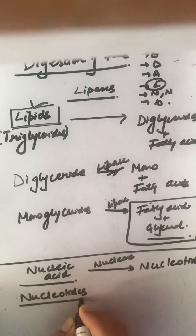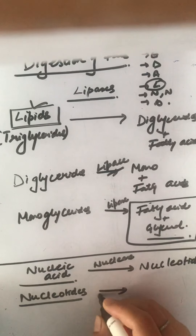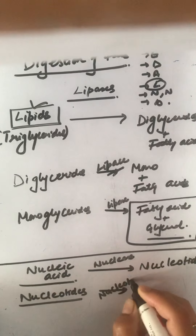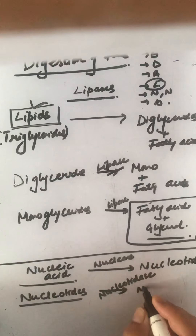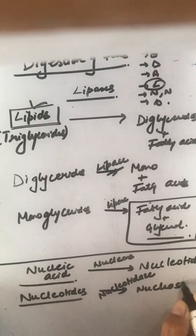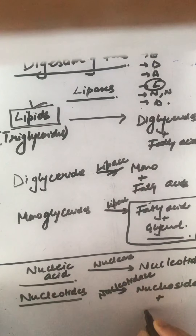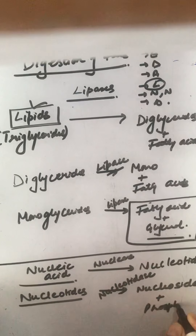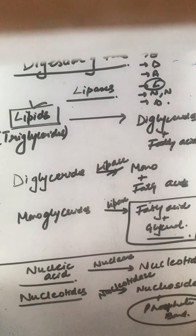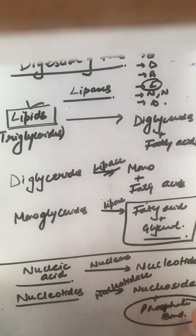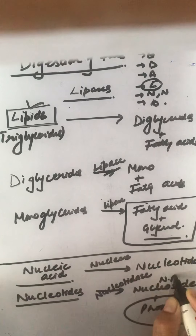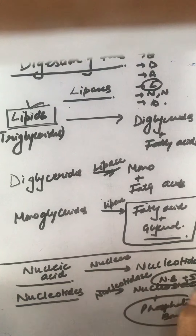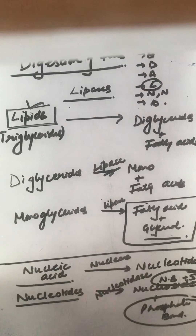These nucleotides are further acted upon by nucleotidase enzyme, producing a nucleoside as well as a free phosphate bond. This free phosphate is eliminated, leaving behind the nucleoside — which contains the nitrogenous base and the sugar component — for further action.